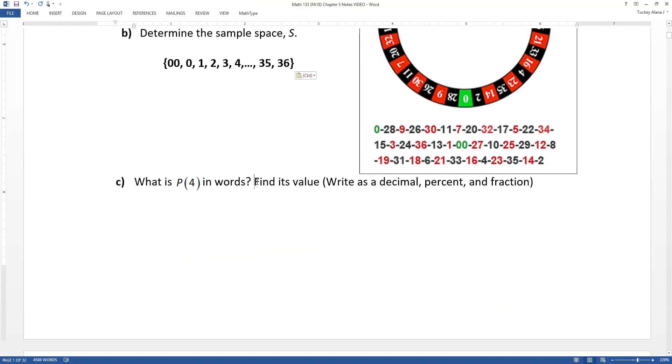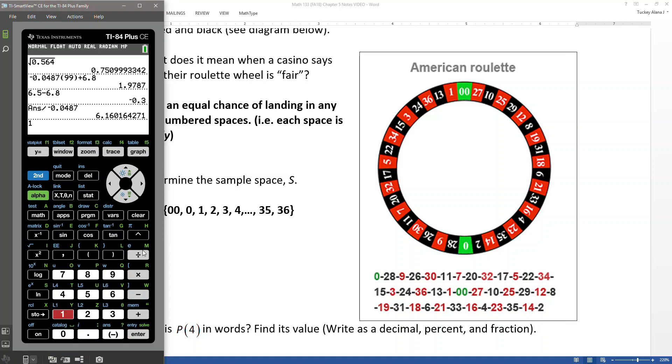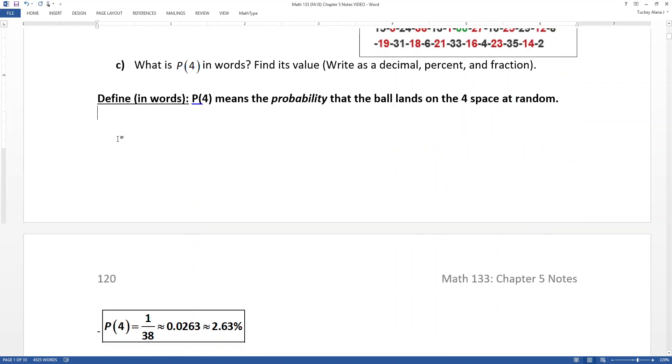What is P of 4 in words and find its value? So here I'm just checking, do you know what P parentheses 4 means? In this context. And then find its value. So in words, what P parentheses 4 means is the probability, because that's the capital P, that the ball lands on the 4 space at random. Right. That's all it means. Now, its value, that's something else. Right. Because the value would be, well, the 4 space is one of these spaces. And on the American roulette wheel, there's 38 spaces total. So it would be 1 out of 38. Now, if you want a decimal for that, take 1 divided by 38, and you get 0.0263, which would be 2.63% or so. There it is.